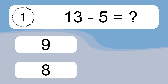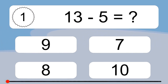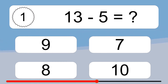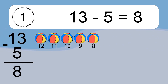13 minus 5 equals what? 13 minus 5 equals 8. Let's count it: 12, 11, 10, 9, 8.